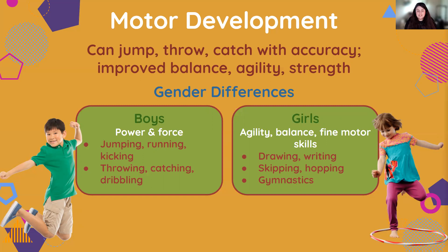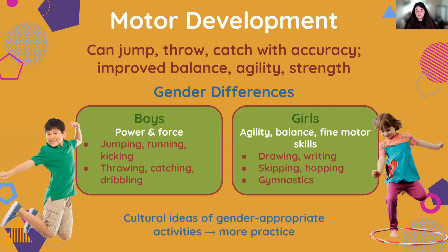So why do we see these gender differences? Genetics can play a role, as well as differences relating to biological sex. But a large part of it is also cultural ideas of gender-appropriate activities — kids are going to be better at the skills they practice more often, and what they practice more often usually stems from the cultural norms emphasized to them about gender. So that is a summary of motor development: we do see improvement as they get older and more developed, and we also note these gender differences.